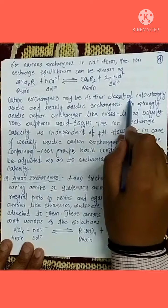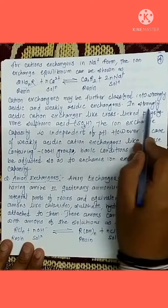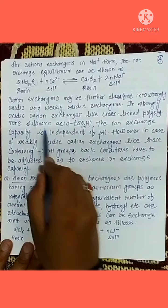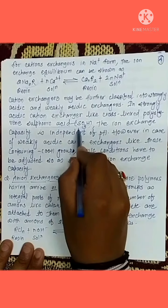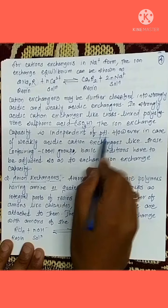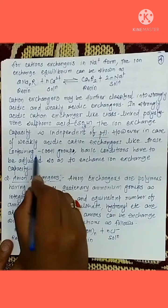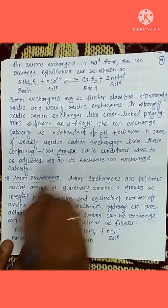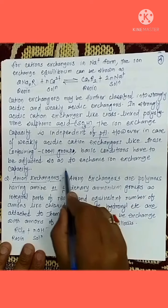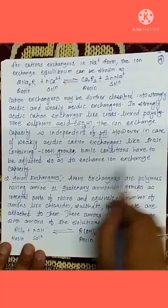Cation exchangers may be further classified into strongly acidic and weakly acidic exchangers. In strongly acidic cation exchangers, like cross-linked polystyrene sulfonic acid, the ion exchange capacity is independent of pH. However, in the case of weakly acidic cation exchangers, like those containing carboxylic COOH groups, basic conditions have to be adjusted so as to enhance ion exchange capacity.